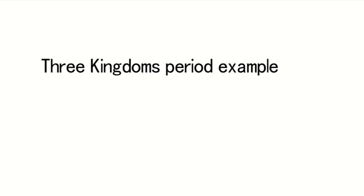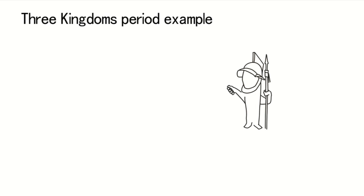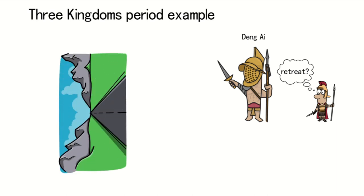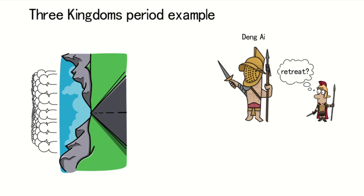Let's take an example from ancient China, during the Three Kingdoms period, to illustrate this point. Dang Aai was leading an attack on Qingdu, and his subordinates suggested a retreat because the enemy had taken control of a narrow pass, making further advance seemingly impossible. I've explained different terrain features in previous videos, so I won't go into detail here.